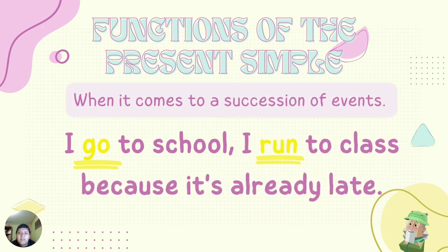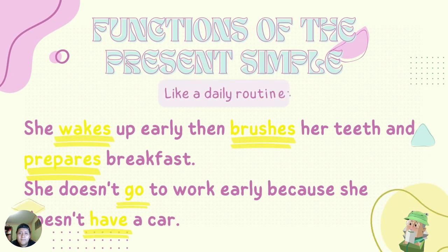When it comes to a succession of events. For example: I go to school, I run to class because it's already late — here we have two verbs in present simple: 'go' and 'run.' Here we have an example like a daily routine: She wakes up early, then brushes her teeth, and prepares breakfast. She doesn't go to work early because she doesn't have a car. Here we have five verbs in present simple: wakes, brushes, prepares, go, and have — and our auxiliary verb 'doesn't.'